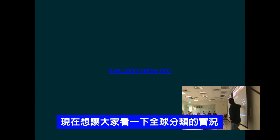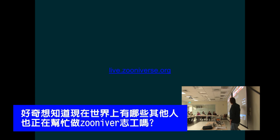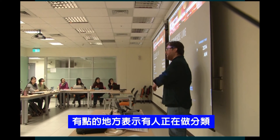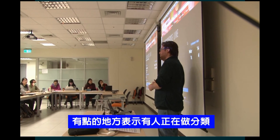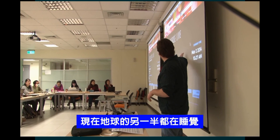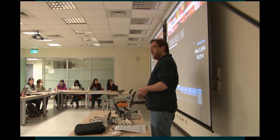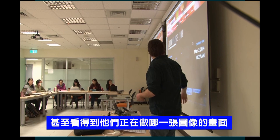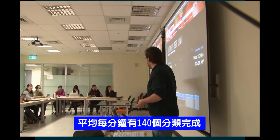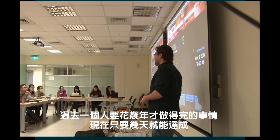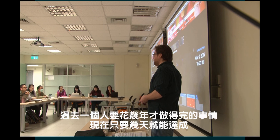So this is actually in real time what's happening on the Zooniverse just now. Every time something comes along the bottom here, that's another person looking at something. Every time you see a dot on the world map, that's somebody looking at something in real time. Right now, every single minute we're doing about 114 times as much work as one person can do, which means every few days we do almost a year's worth of person work.